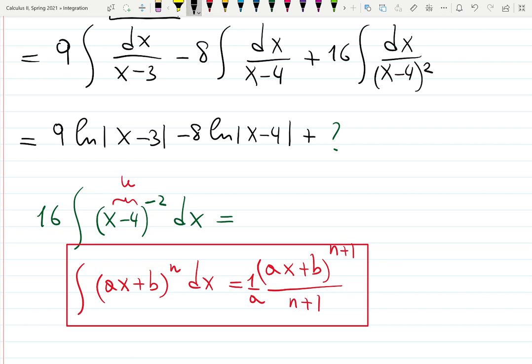Using shortcut, I can say the answer will be 16 times x minus 4 raised the exponent by 1, so minus 2 plus 1 gives you minus 1. Divide by that new exponent minus 1. And also divide by the leading coefficient, that's 1 over 1.